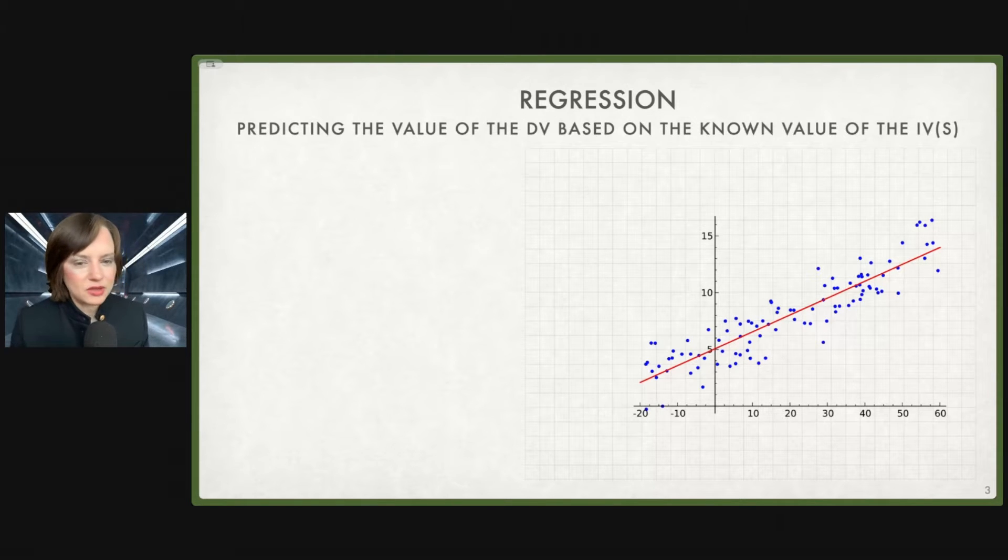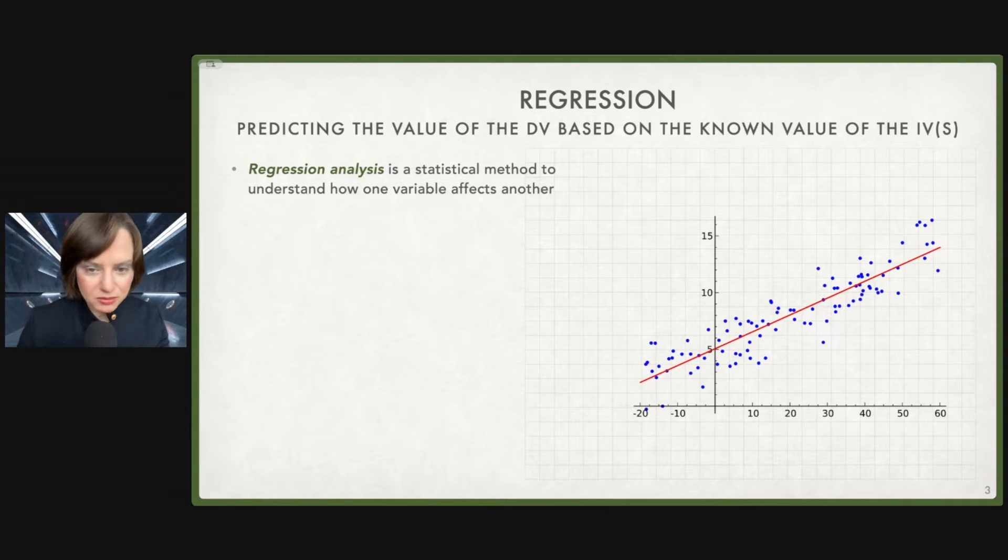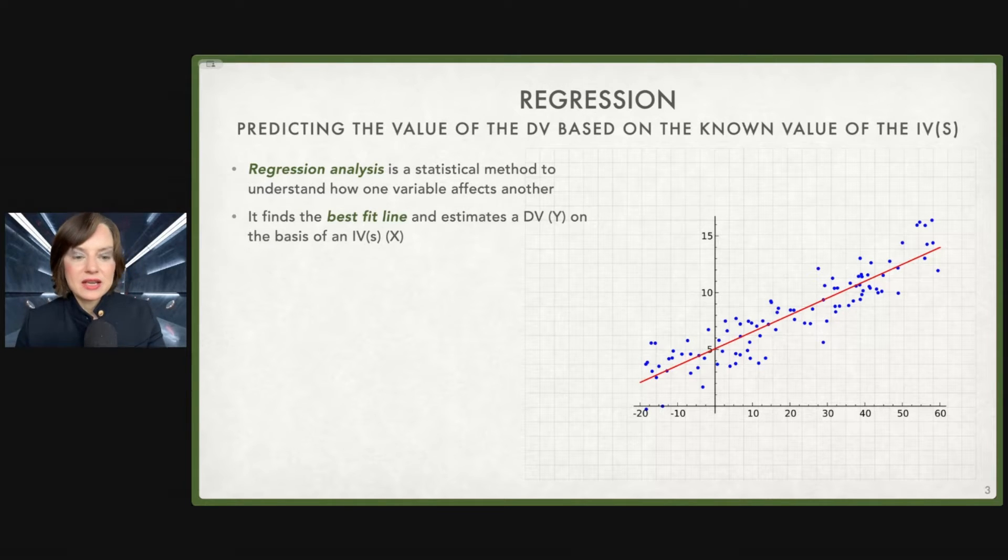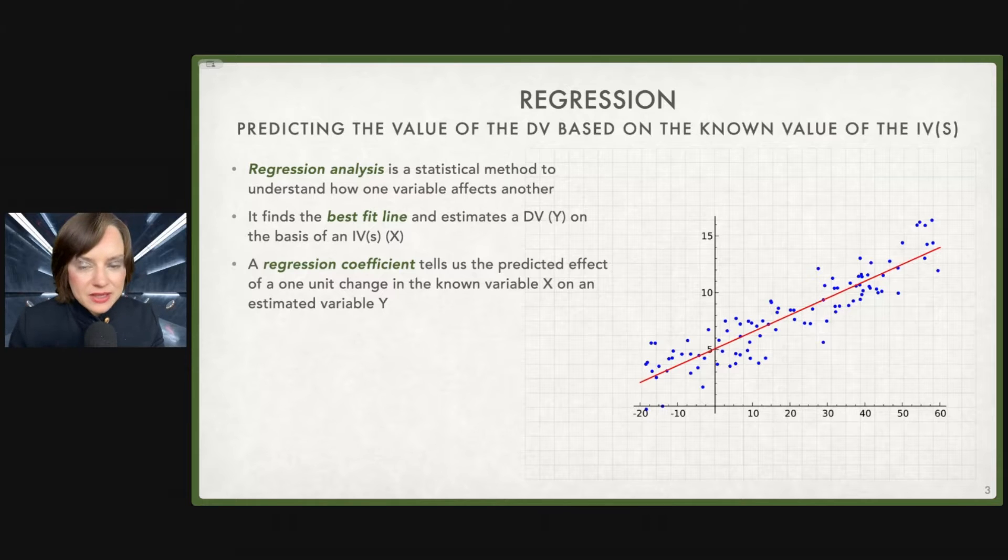All we're doing in regression is predicting the value of a dependent variable in our model, the thing we want to understand, based on the known values of the independent variables that we think drive that dependent variable. We are going to generate a regression coefficient. This is going to tell us specifically the predicted effect of a one unit change in the known variable X on an estimated variable Y.